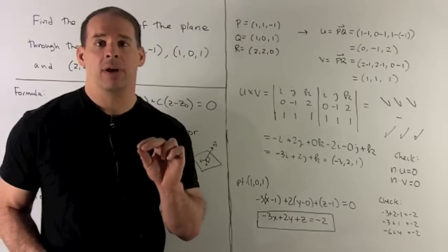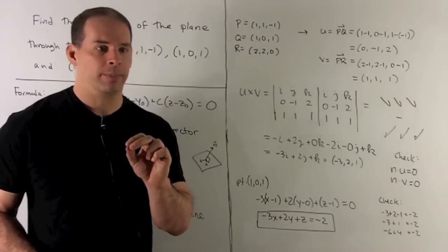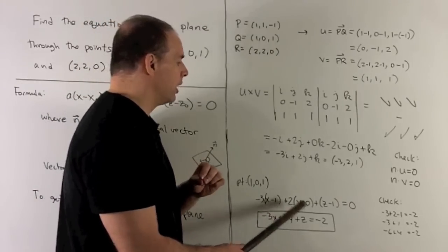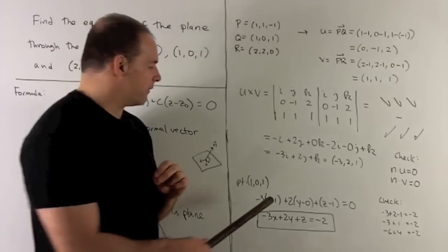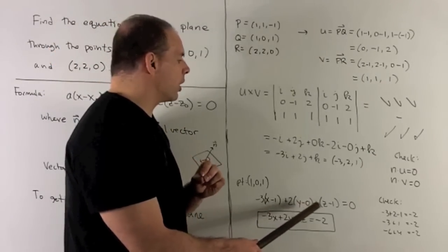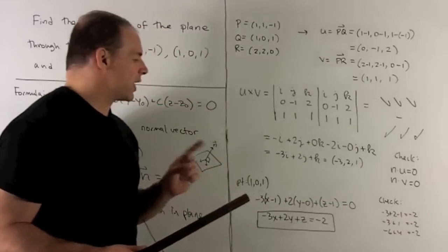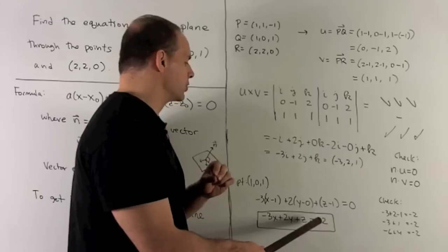Okay, so now I have my normal vector. I can just throw things into the equation. So I load up A, B, and C. It's going to be -3, 2, and 1. I'll use the point (1, 0, 1). So I'll have X - 1, Y - 0, Z - 1. That's all equal to zero. And so that's going to collapse to -3X + 2Y + Z = -2.